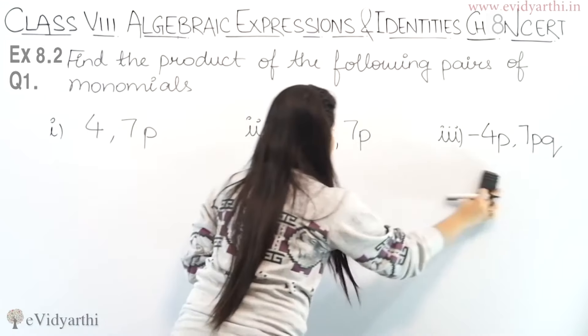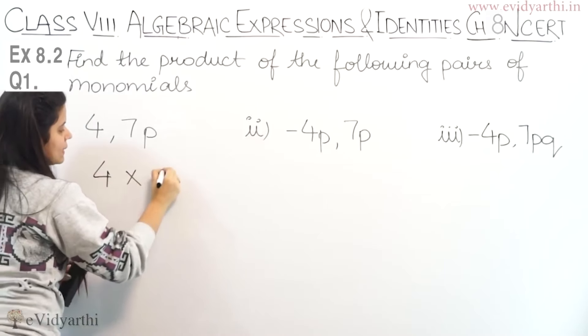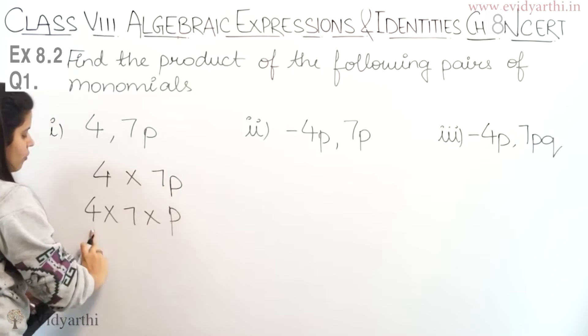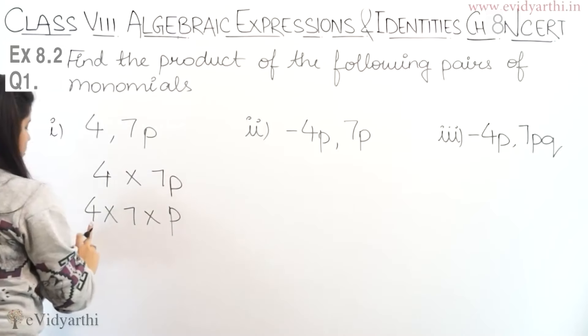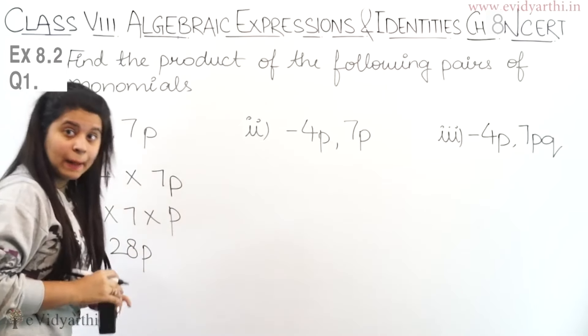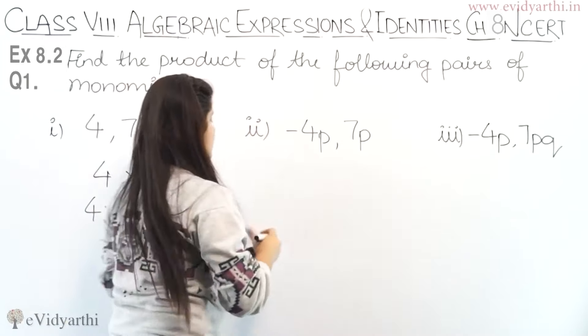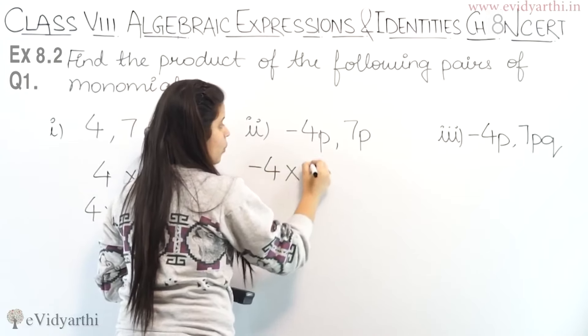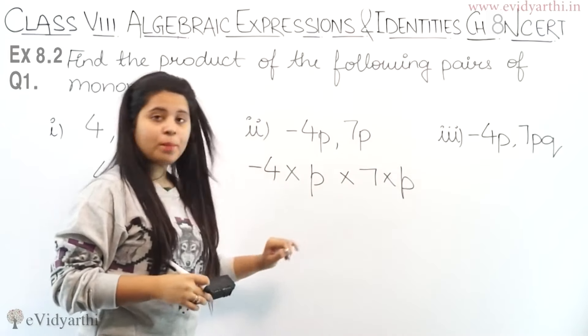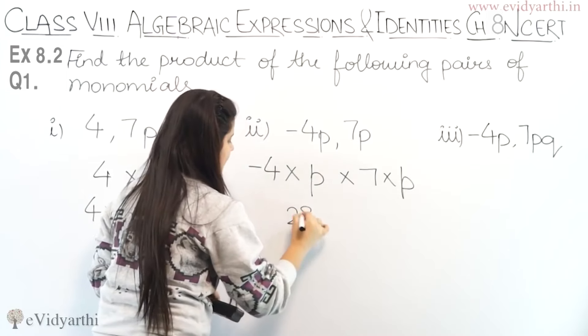So, coming back to the first part. We have 4 and 7P, which means we have to multiply 4 by 7P. So 4 times 7 times P equals 28P.